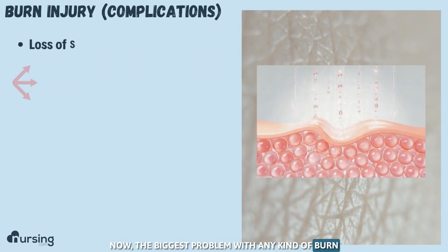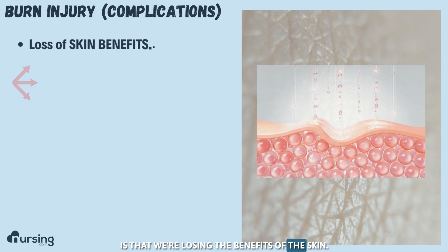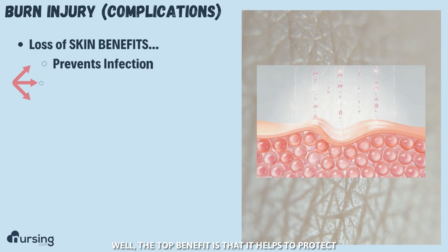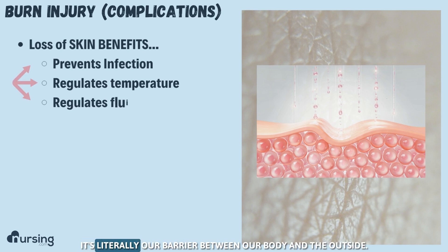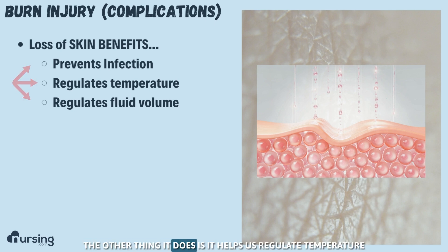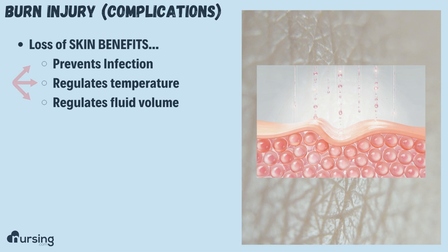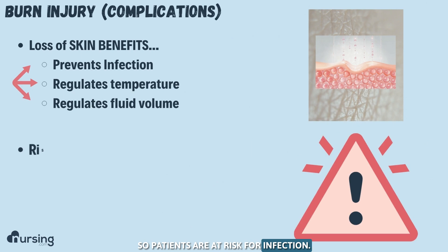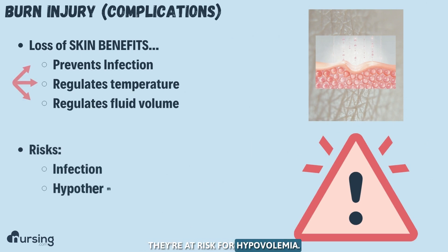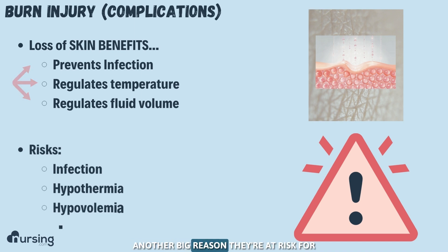The biggest problem with any kind of burn is that we're losing the benefits of the skin. The top benefit is that it helps protect and prevent infection — it's literally our barrier between our body and the outside. The skin also helps us regulate temperature and regulate our fluid volume, physically holding fluids in. So patients are at risk for infection, hypothermia, and hypovolemia.